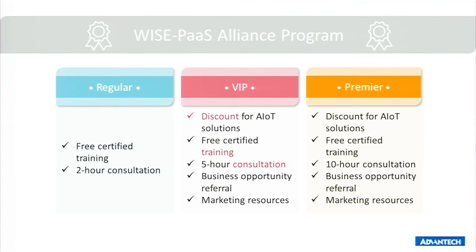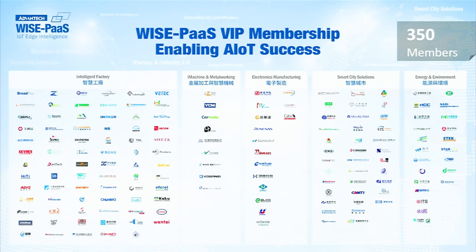On the WisePass Marketplace, as Casey said, we use WisePoint as the currency. By purchasing different amounts of WisePoint, you may access different levels of the Alliance program. As a VIP member like John, you can enjoy discounts for IoT solutions, and also training and consultation. So far across the globe, we have already 350 members across verticals, including intelligent factory, iMachine, electronics manufacturing, smart city, and energy environment. Some of these VIPs are also here today, like La Con and Nexwarehouse of course. And we also got one more VIP from Germany yesterday.